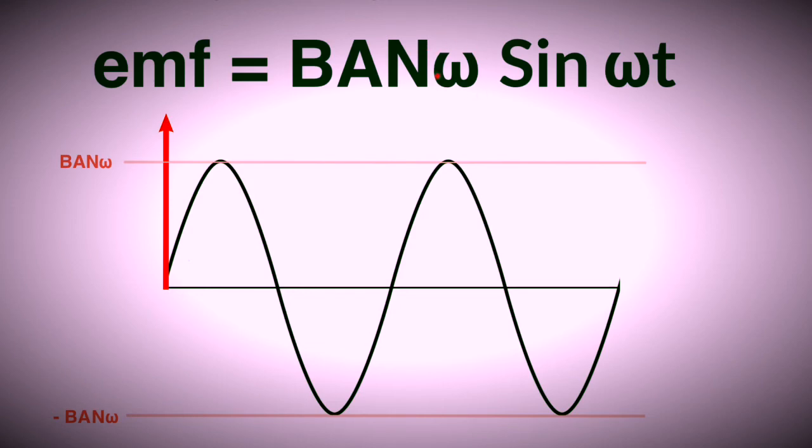Remember you can get omega from 2π over T where T is the period of rotation. And omega also equals 2πf if you prefer, where f is the frequency of rotation, complete rotations per second. And that's that for finding the EMF from an AC generator.